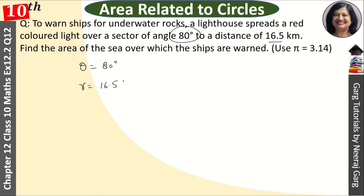16.5 kilometer. And the value of pi is 3.14 and the area of sea over which ships are bound. So see, this is a very simple thing.